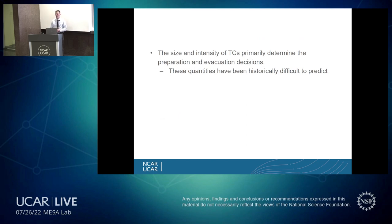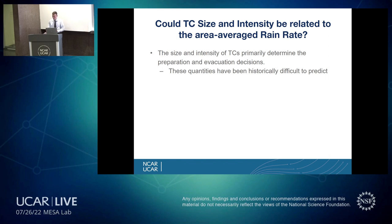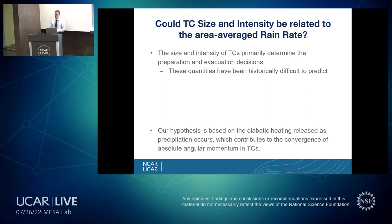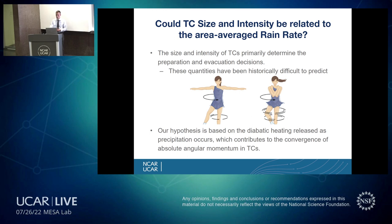The preparation and evacuation decisions that are needed are mostly driven by the size and intensity of tropical cyclones. But these quantities have been historically difficult to predict due to the complexity of the multiscale processes that control or influence intensification and expansion. Our research wanted to know whether the size and intensity of tropical cyclones can be related to the area-average rain rates, based on the diabatic heating that is released during precipitation. This relates to the convergence of absolute angular momentum — similar to a spinning ice skater — where the diabatic heating creates lower pressure, the convergence of absolute angular momentum increases, and the cyclone spins up faster and faster.